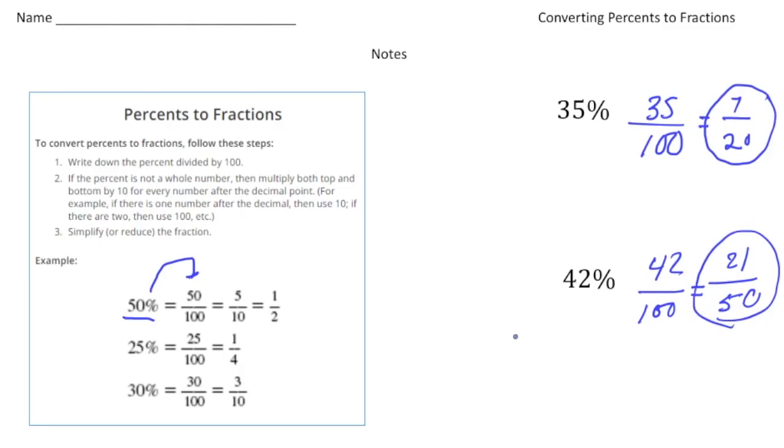I want to do one extra one that has a decimal involved. So let's say, for example, we have 0.5%. Less than 1%, just half a percent. So what you do, we write it as 0.5 over 100.